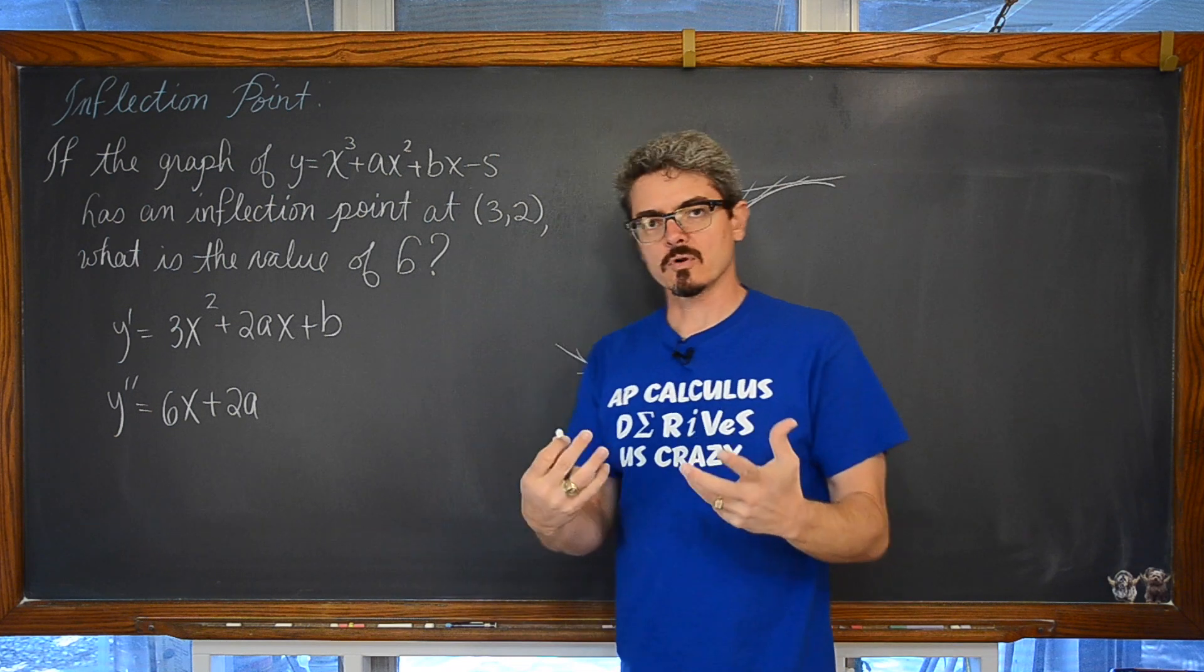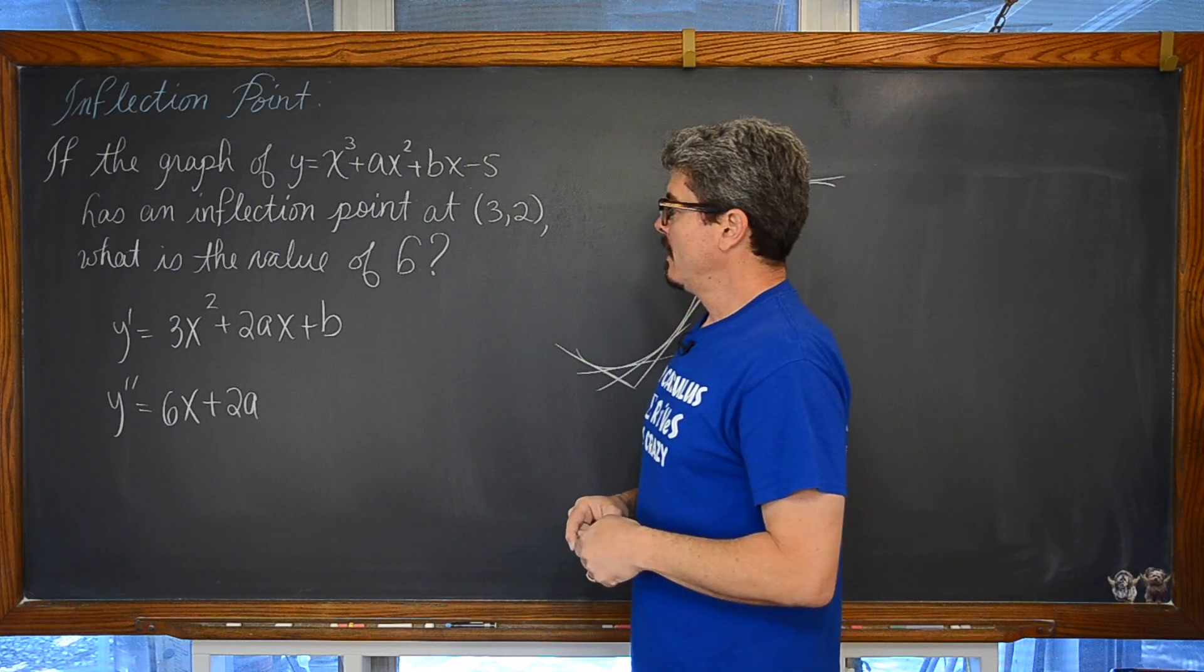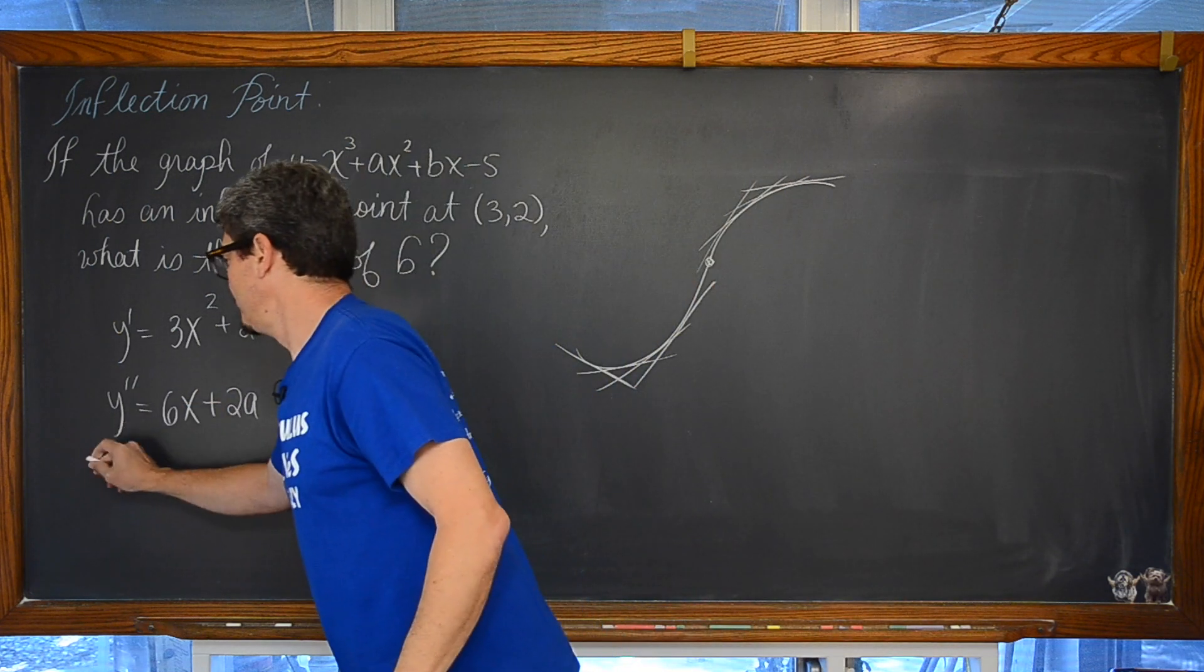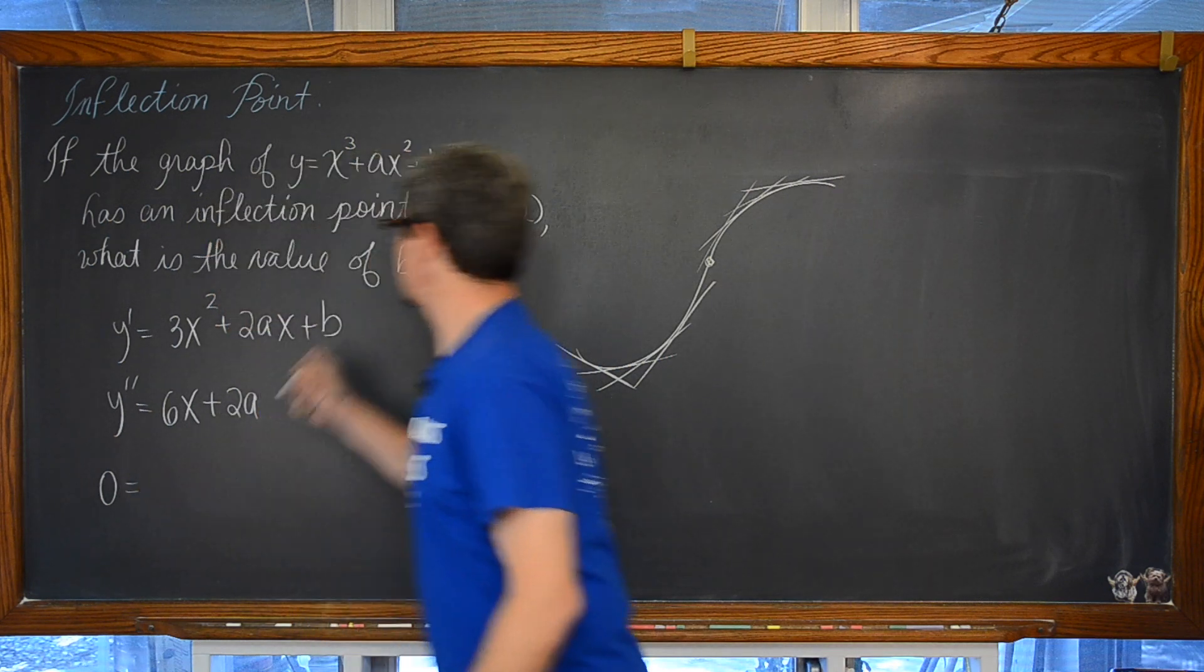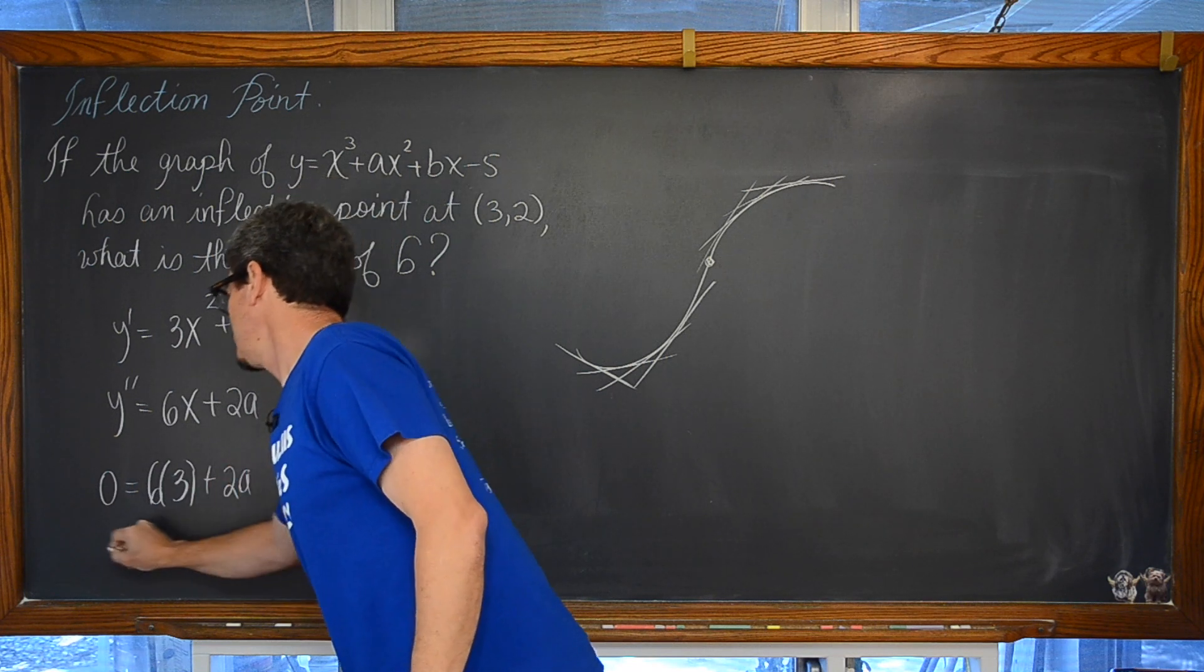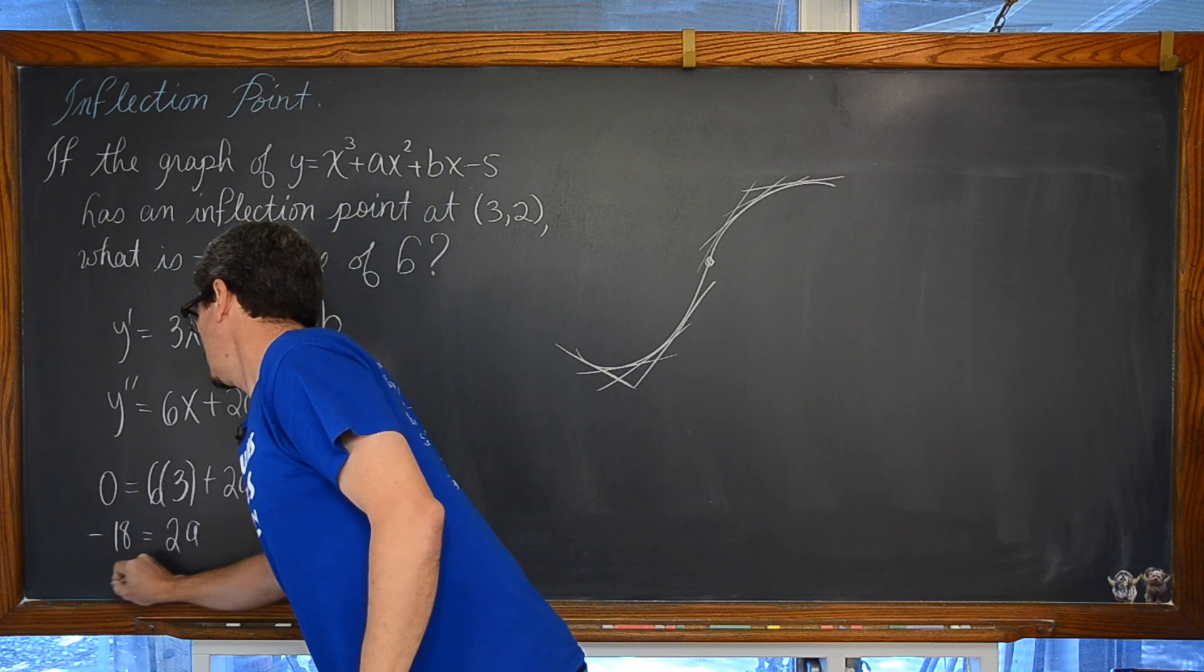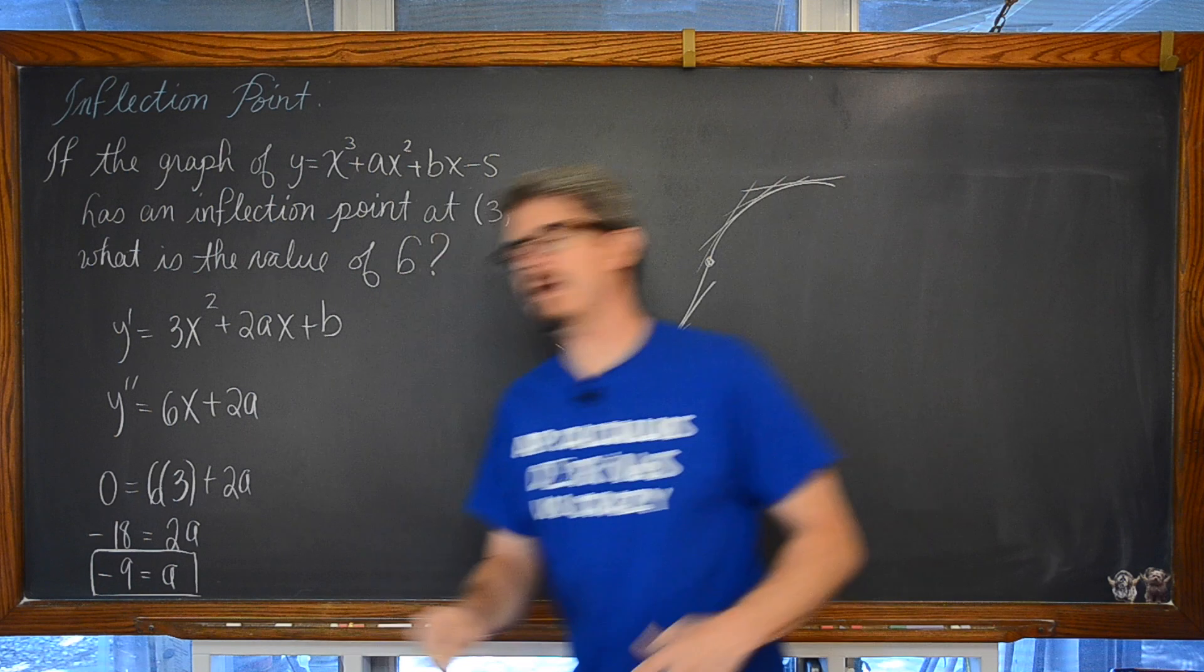But that is where you start looking for your critical values. So if there is an inflection point at (3,2), well then y double prime has to be equal to zero when x is equal to 3. Which means we are looking at negative 18 is equal to 2a, which means negative 9 is equal to a. Hooray!